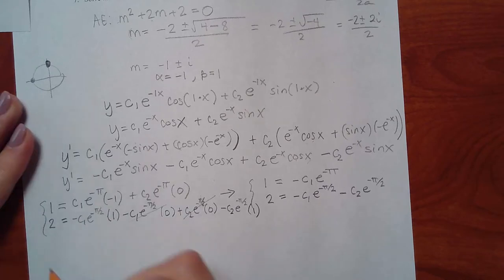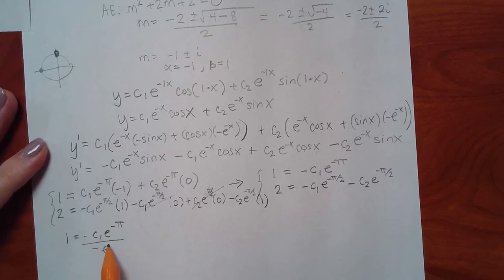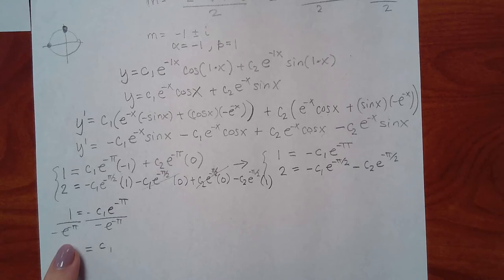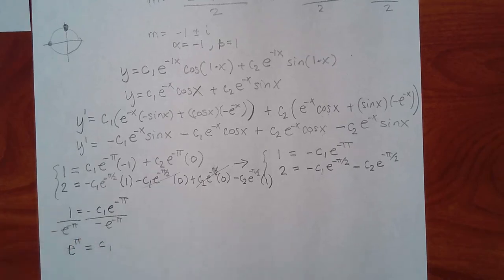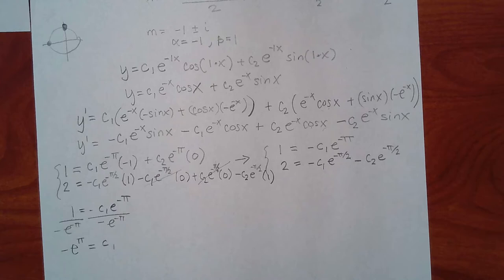From the first equation, divide both sides by negative e to the negative π: the negative exponent brings e to the positive π, giving c1 equals negative e to the π. Now substitute into the second equation. The c1 term becomes positive e to the π times e to the negative π/2, which by exponent addition (π minus π/2) gives e to the π/2.